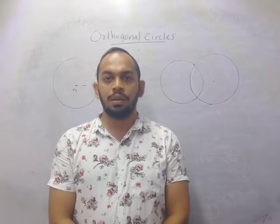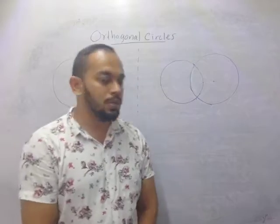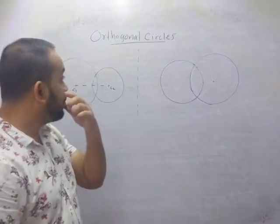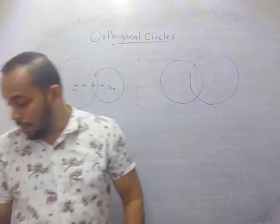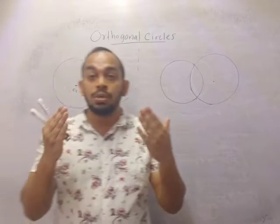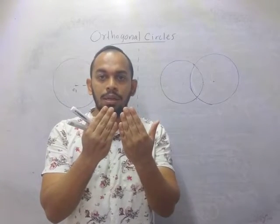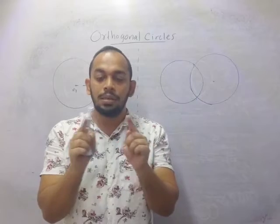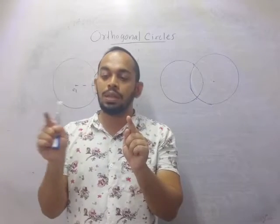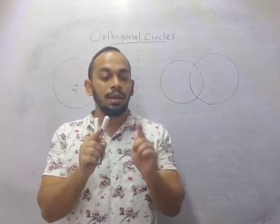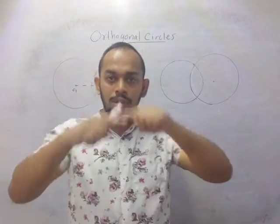This would be the final theorem under your syllabus: orthogonal circles. So what do you call orthogonal circles? When you have two circles intersecting one another, the distance between two centers is less than the sum of the radii and greater than the absolute value of the difference of the radii.